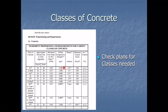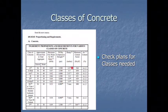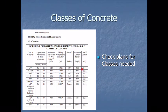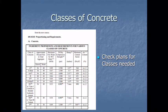Class A concrete has a 3500 psi compressive strength requirement, a 2 to 5 inch slump requirement, and air of 6 plus or minus 2. We'll work our way down the list from there.